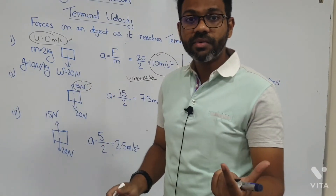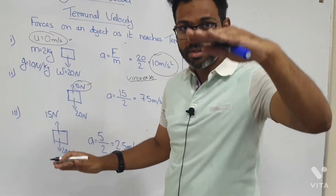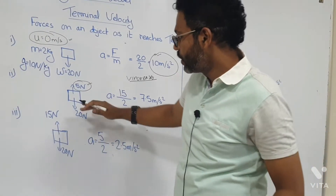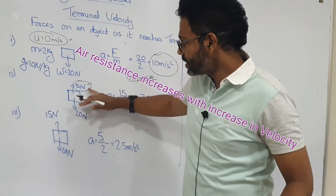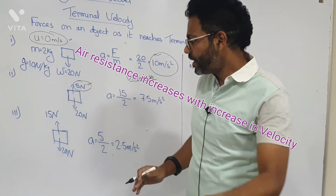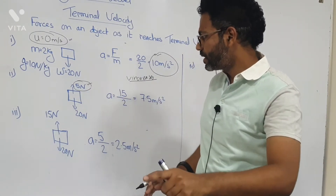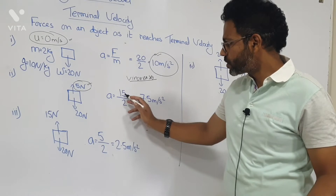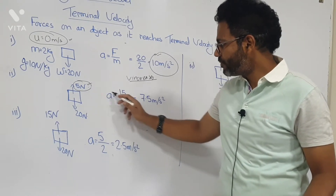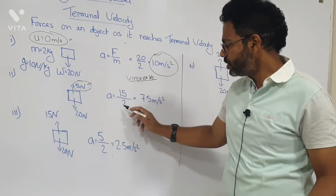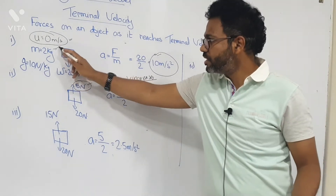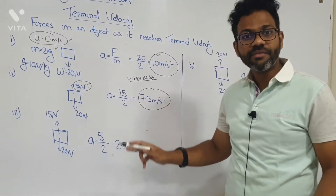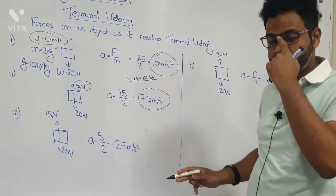The air resistance started acting because now the object is moving — it has a velocity which is increasing. So the air resistance is now 5 Newtons. The resultant force is now 20 minus 5 = 15 Newtons. Mass still remains 2 kg, so the acceleration is now 7.5 m/s².